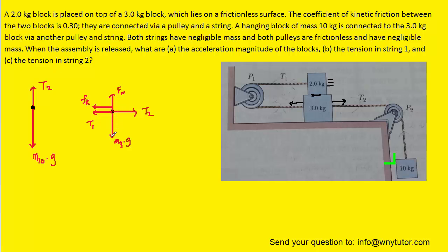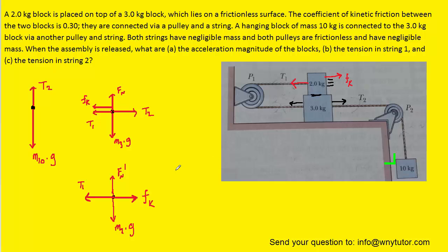There's a gravitational force acting down on the three-kilogram block as well as a normal force. For the two-kilogram block, which is being pulled to the left, we can see that there's a tension force T1 acting to the left, and then there's that same frictional force between blocks two and three. In this case, that frictional force will be pointing to the right, because it's opposing the motion of the two-kilogram block. This block is traveling to the left, so the kinetic frictional force will be opposing it and pointing to the right.